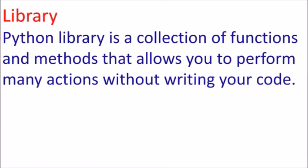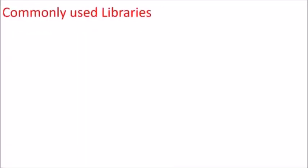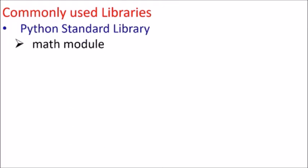Just to differentiate between the two, I have taken this example. A Python library is a collection of functions and methods that allow you to perform many actions without writing code. Commonly used libraries in Python include the standard library, which is pre-installed and does not need to be installed separately — we just have to import it. It contains the math module with predefined functions like pow (power), sqrt, floor, and others used for calculation purposes.